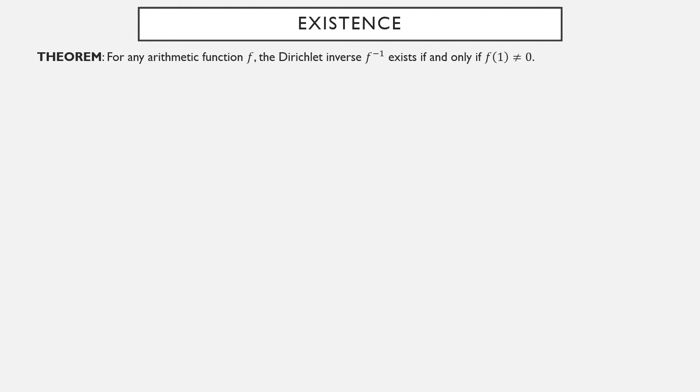How do we even know inverse functions exist? Here's a theorem: for any arithmetic function f, the Dirichlet inverse function exists if and only if f of 1 is not 0.